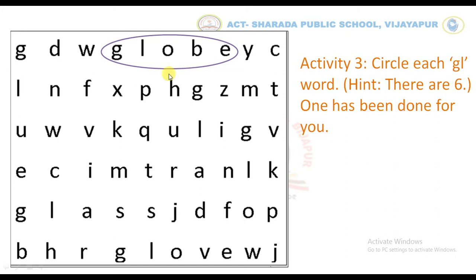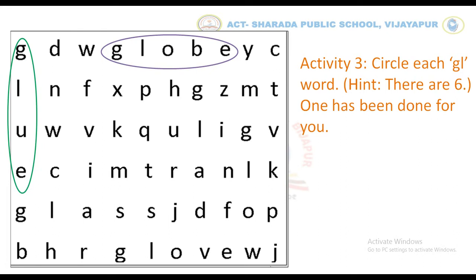So kids, find one more word. Yes, it's here. It is GL. Now circle it. In the same way, you have to find the remaining four words.